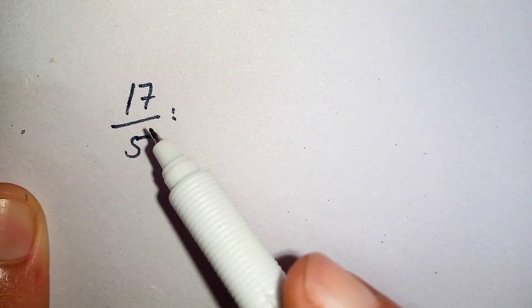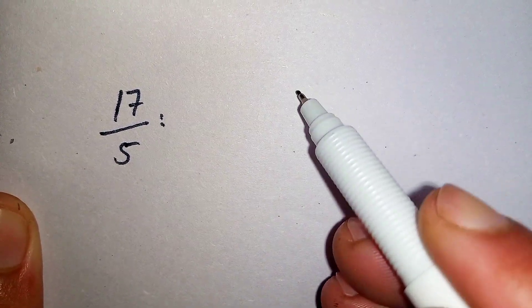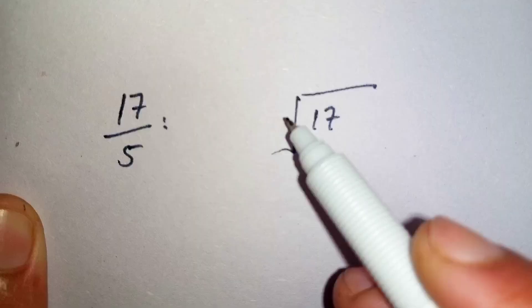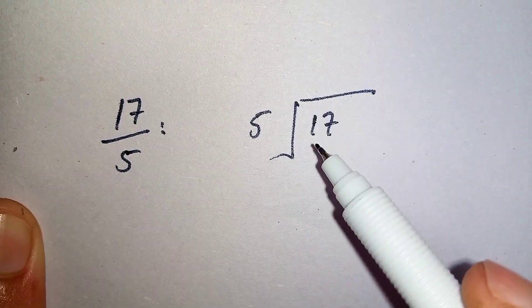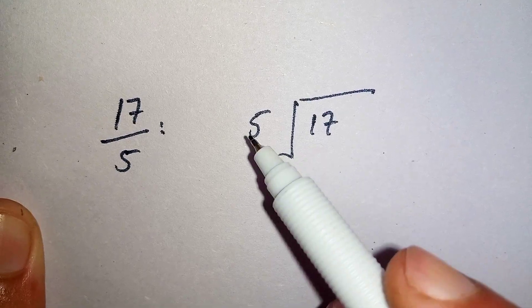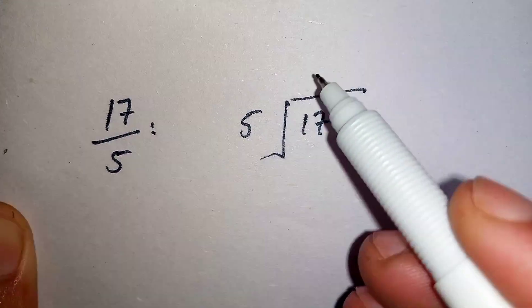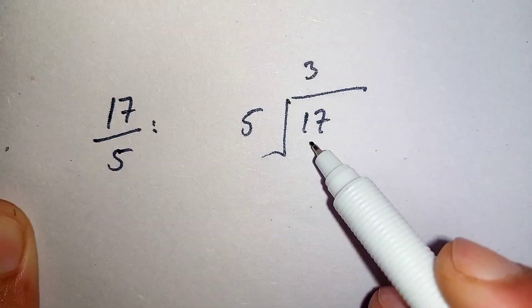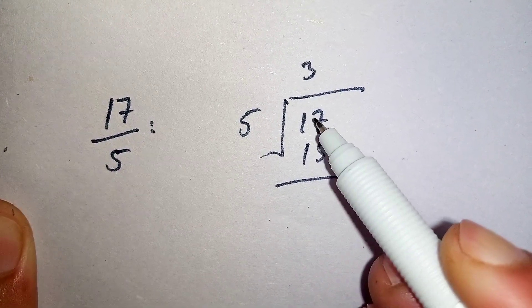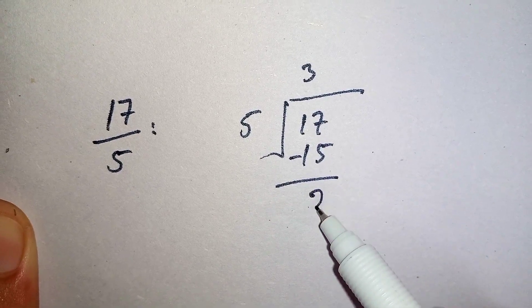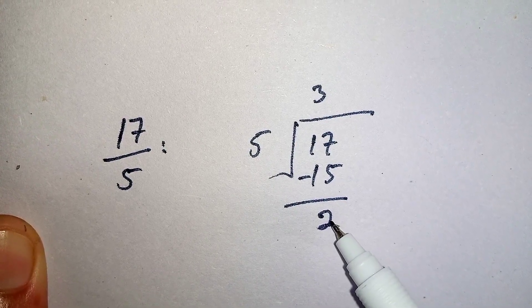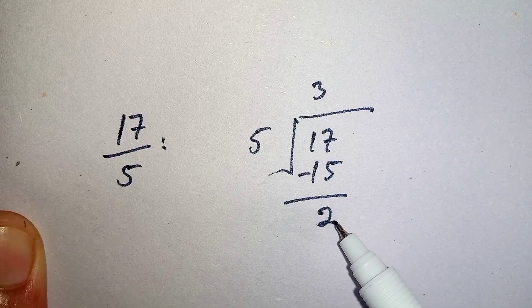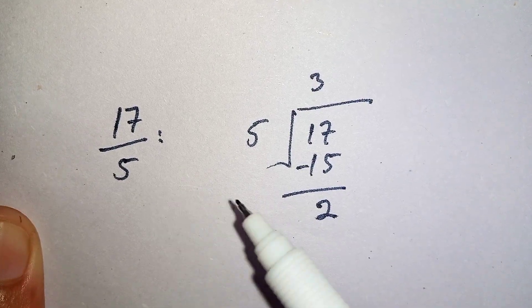Here we see that 17 is divided by 5, so we will divide 17 by 5. We will multiply 5 with such a number whose multiplication is equal to 17 or less than 17. So 5 times 3 is 15. Now subtract 15 from 17, which is equal to 2. Here we see that 2 is less than 5 and we cannot directly divide 2 by 5, so we will take 2 as the remainder.